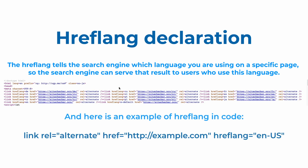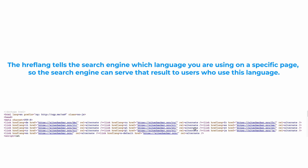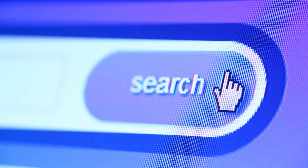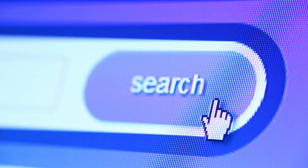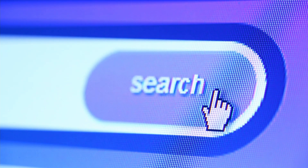Here you can see an example of how hreflang can look in code. For example, if you create a different language version — Spanish, for example — of your English language homepage, you would provide it to users by using a specific hreflang tag, so that users with relevant IPs are served that page in Spanish instead of the English version.